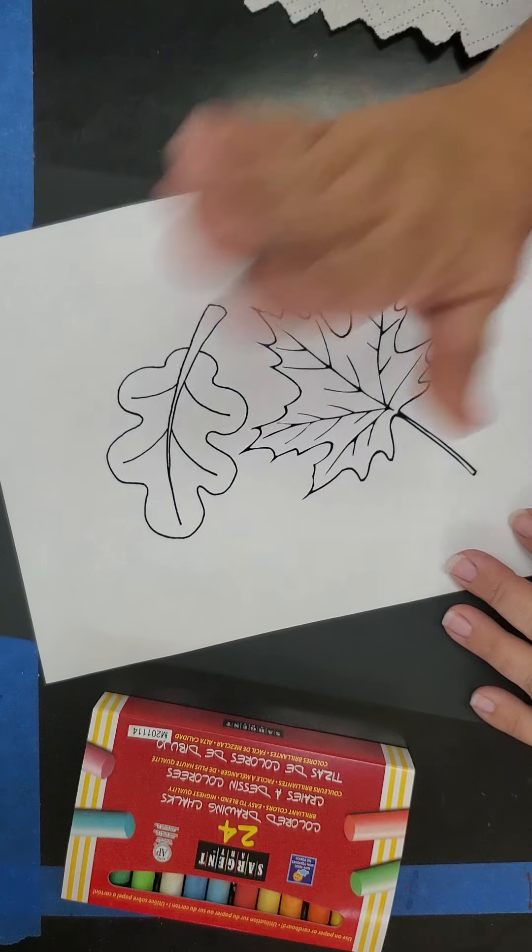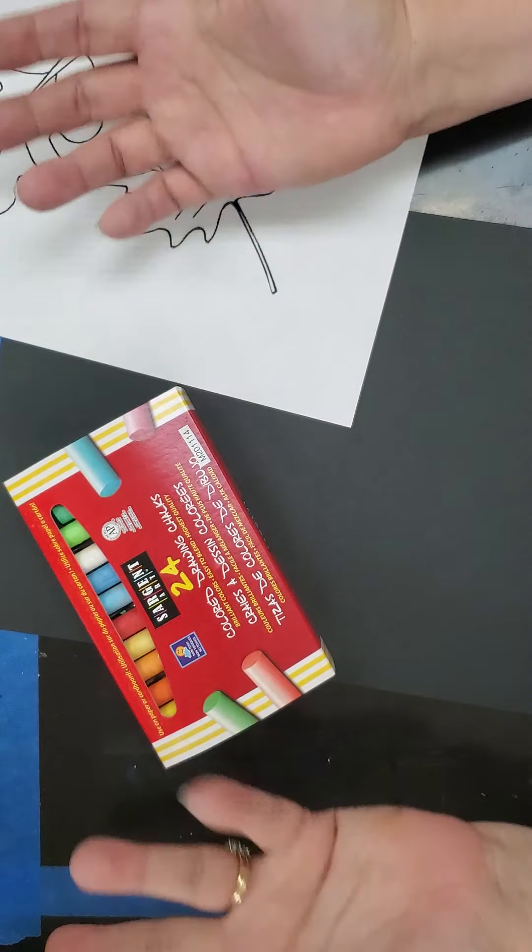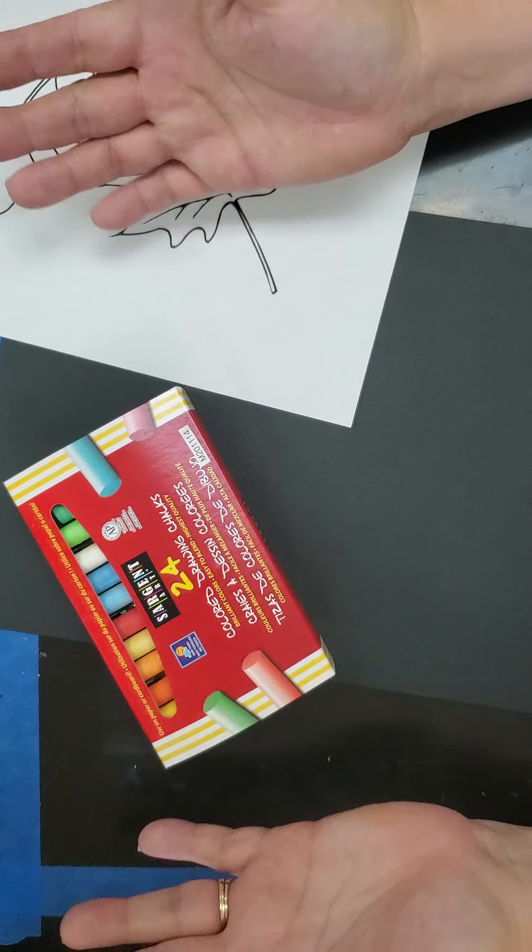It doesn't matter, but you need a leaf. You need a black sheet of paper, and you need chalk. This is chalk. You could use any sort of chalk, sidewalk chalk. It doesn't matter.